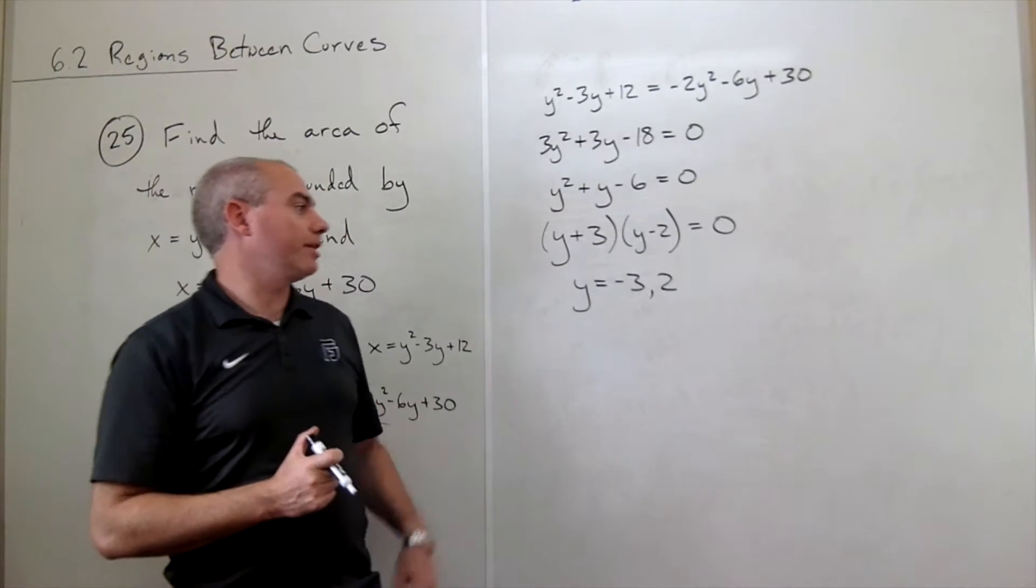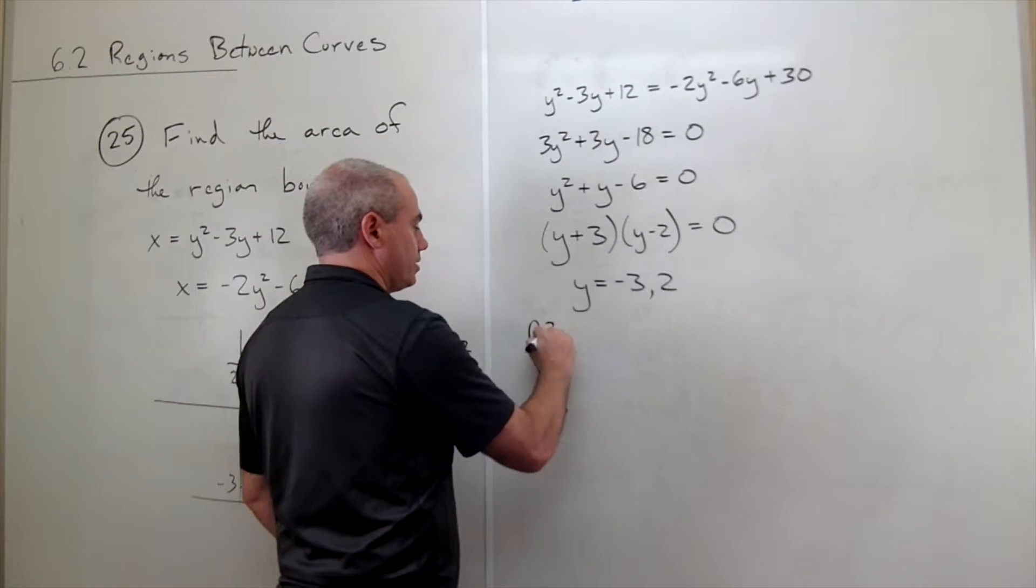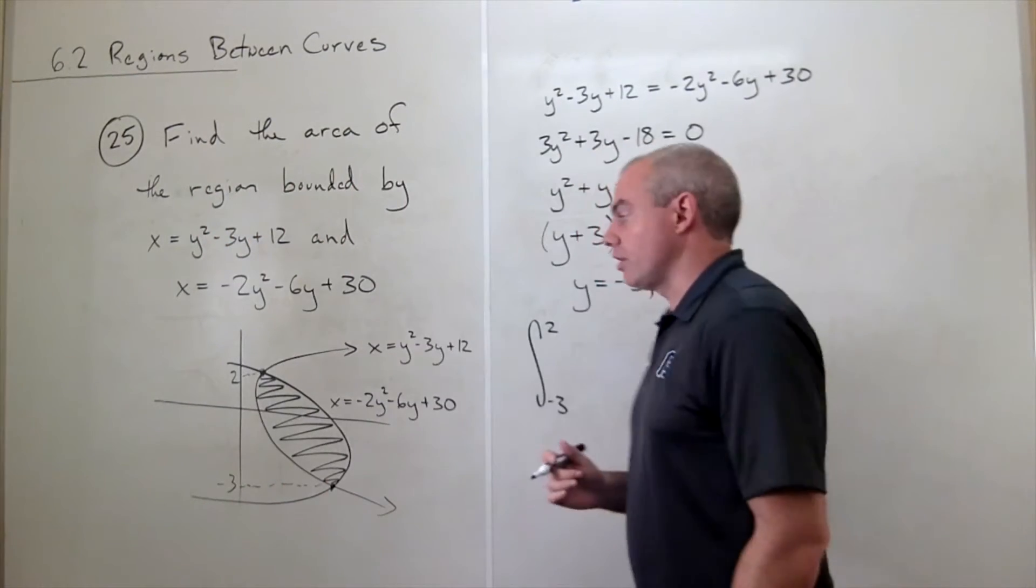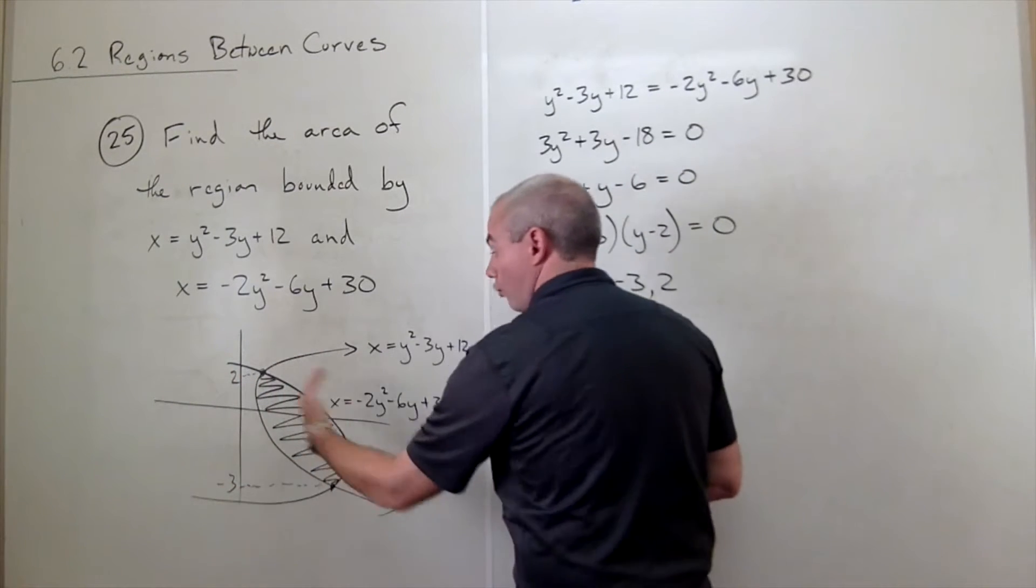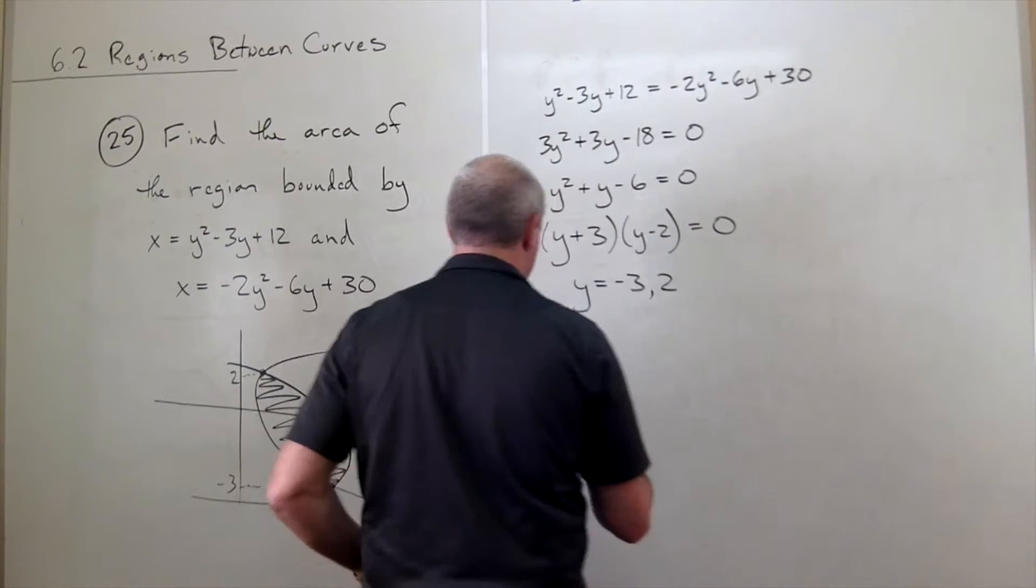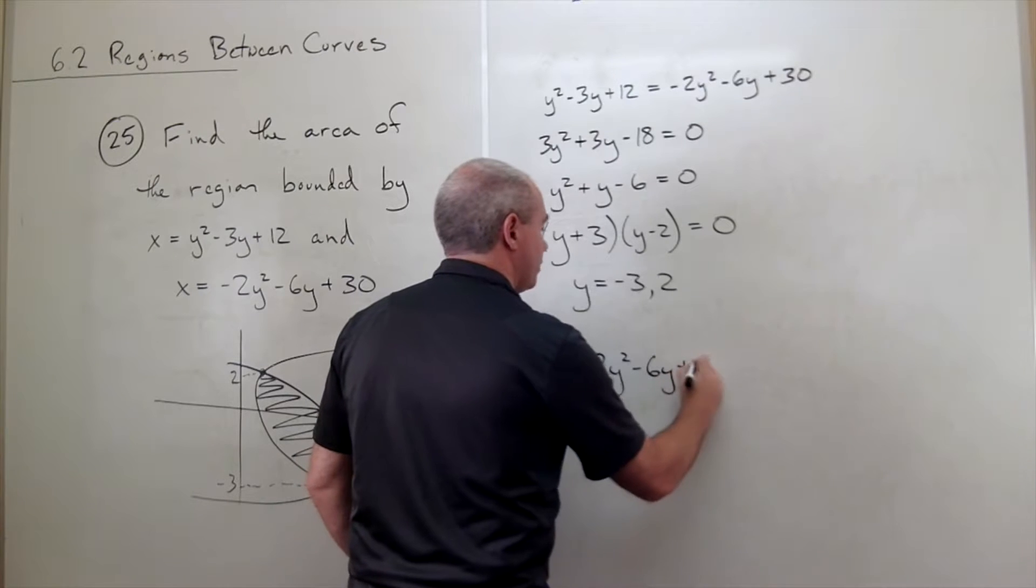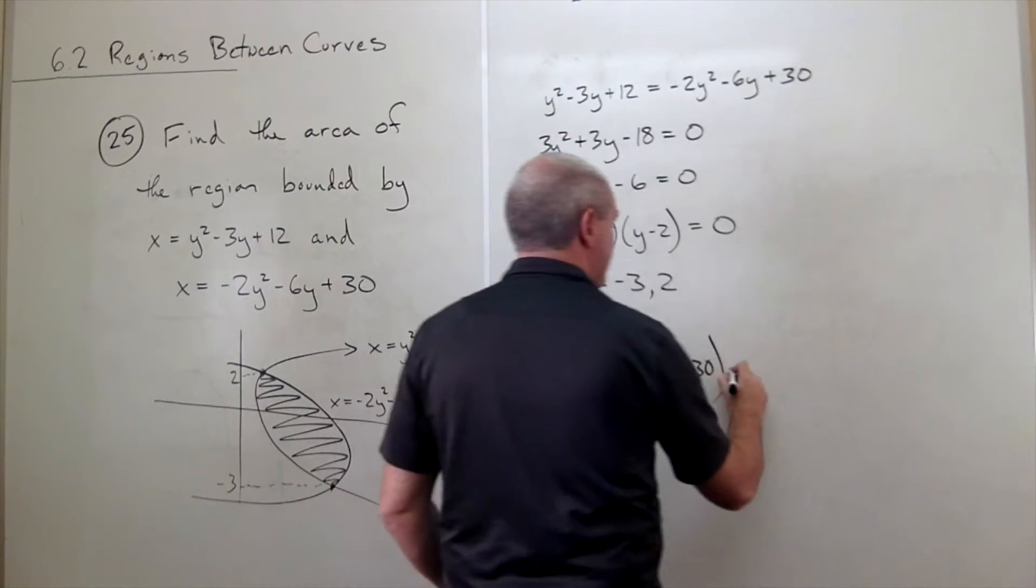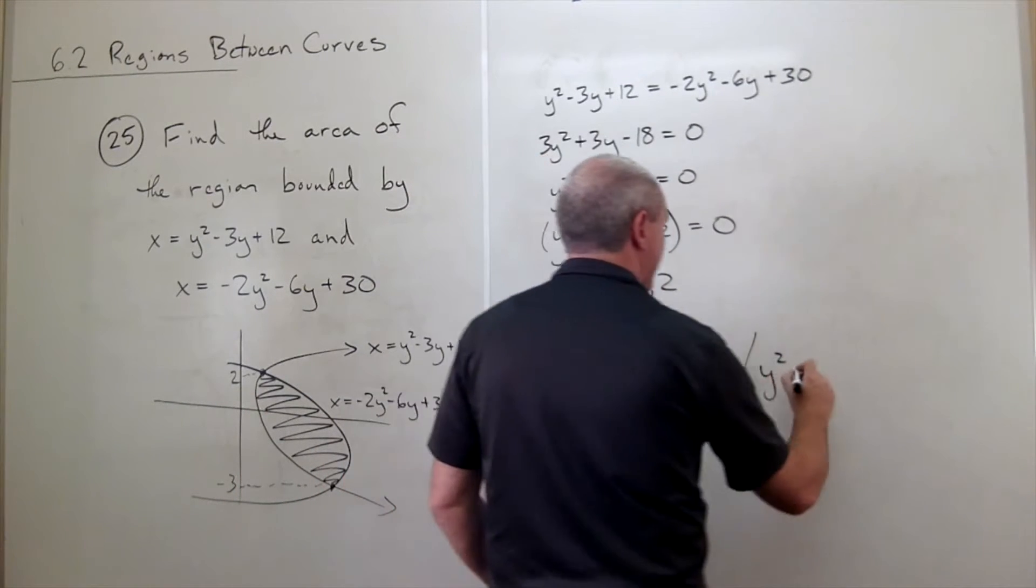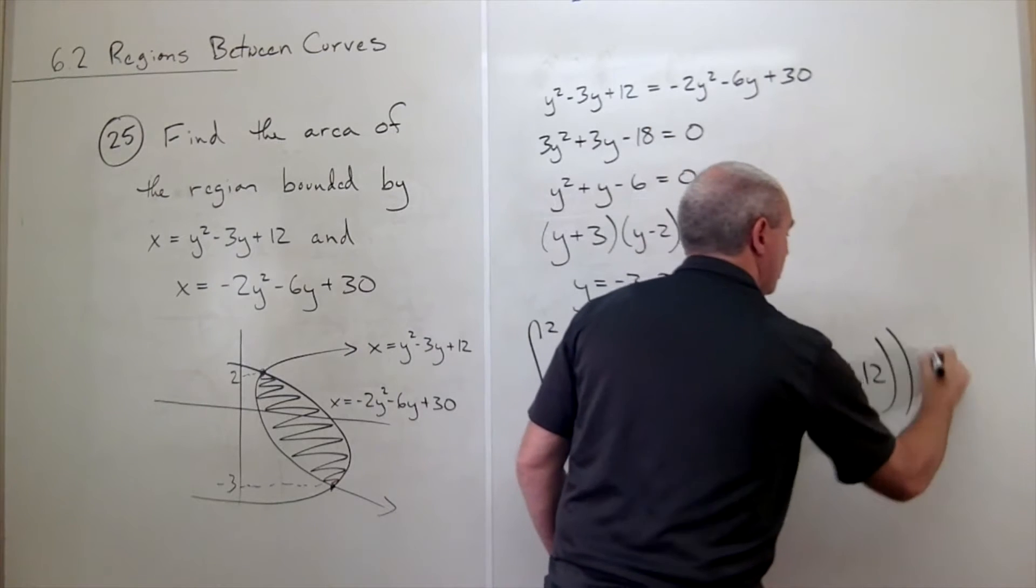Now that we have our limits of integration, we can set up our integral, and our integral is going to be the integral from negative 3 to 2 of the top function minus the bottom function. Here on this graph, you can see our top function, or the rightmost function, is negative 2y squared minus 6y plus 30. So I've got minus 2y squared minus 6y plus 30 minus the bottom function, which is my y squared minus 3y plus 12, all of that dy.